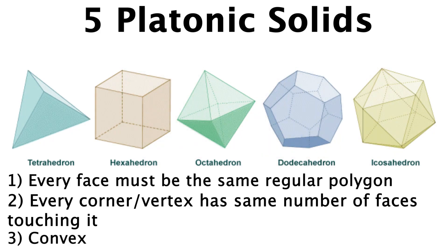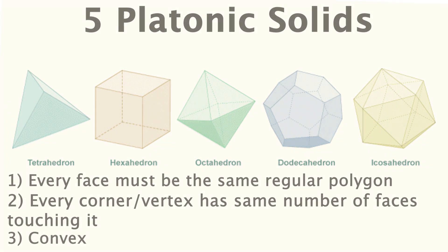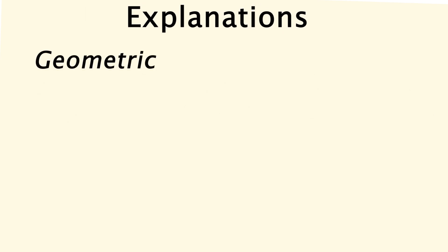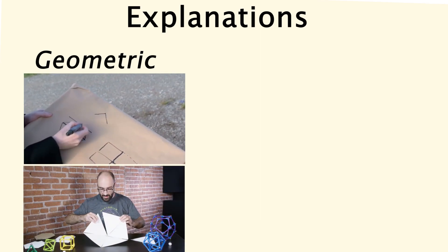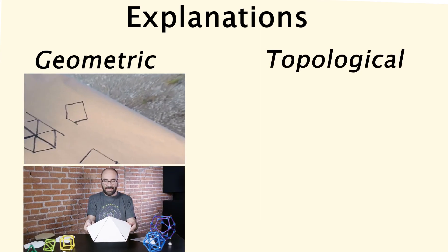But now the question is why can't we make anything except these five? Well there are two main ways to show this. One is the geometric explanation which is more common as Numberphile and Vsauce Michael have shown it, but there's also a more advanced topological proof which I'll show as well.